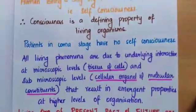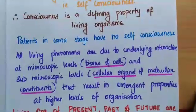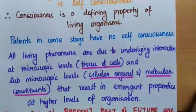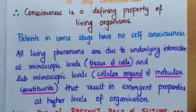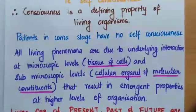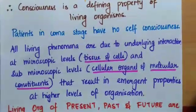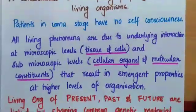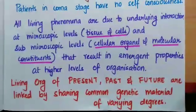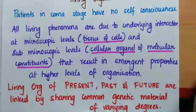All living phenomena are due to underlying interactions at the microscopic level — which means tissues and cells — and sub-microscopic level — which includes cellular organelles and molecular constituents — that result in emergent properties at higher levels of organization. Living organisms of the present, past, and future are linked by sharing a common genetic material of varying degrees.